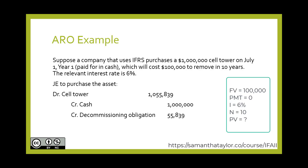For those wondering what calculator mode to use: most calculators, including the BA2+, default to END mode. That reflects the fact that it's $100,000 at the end of 10 years. We keep the calculator in END mode when doing present value calculations, except when it comes to leases in a later chapter. So for now, it's at the end of 10 years.